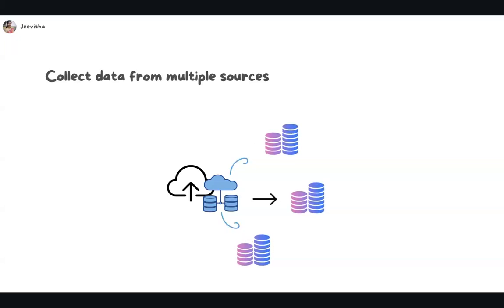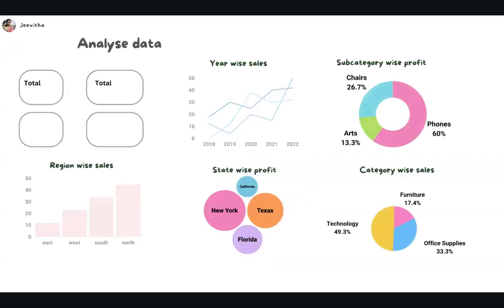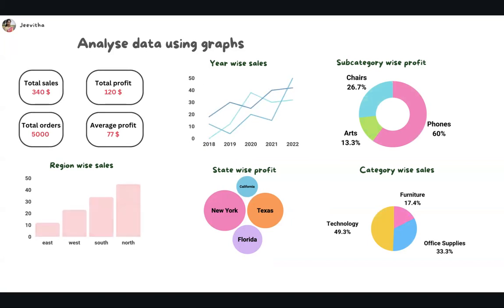Once you collect your data, what do you do? We all know that just by looking at our data, we can't really understand anything — you need to analyze it. How do you analyze your data? That can be done with the help of a statistical summary — like we try to find the total sales, total profit, how many orders there are, what's the average profit, what's the minimum sales, what's the maximum sales.